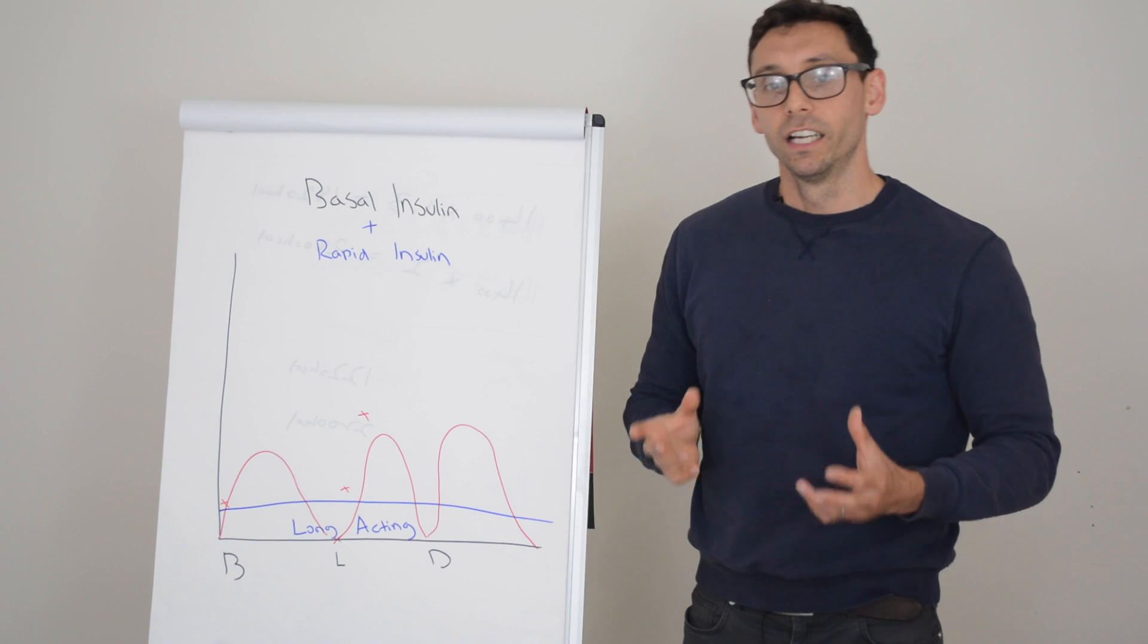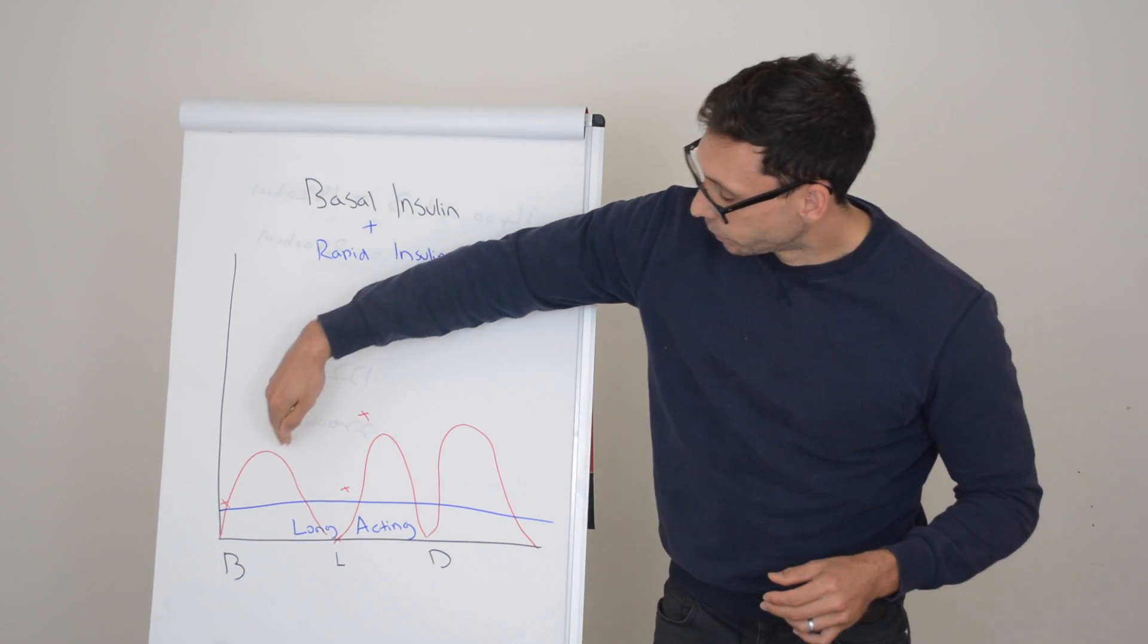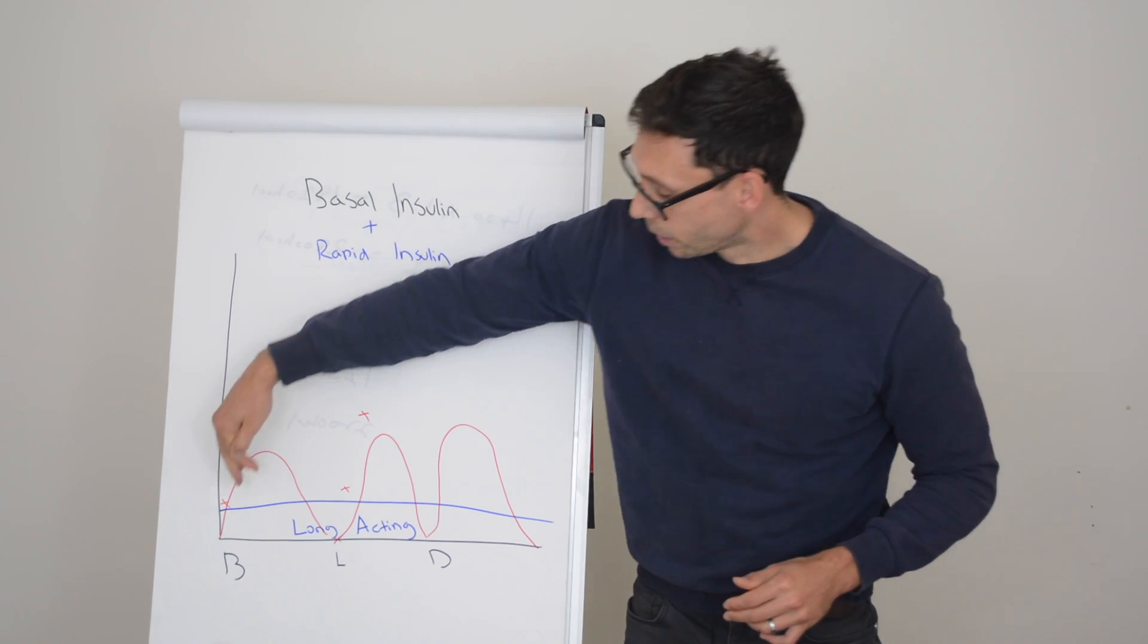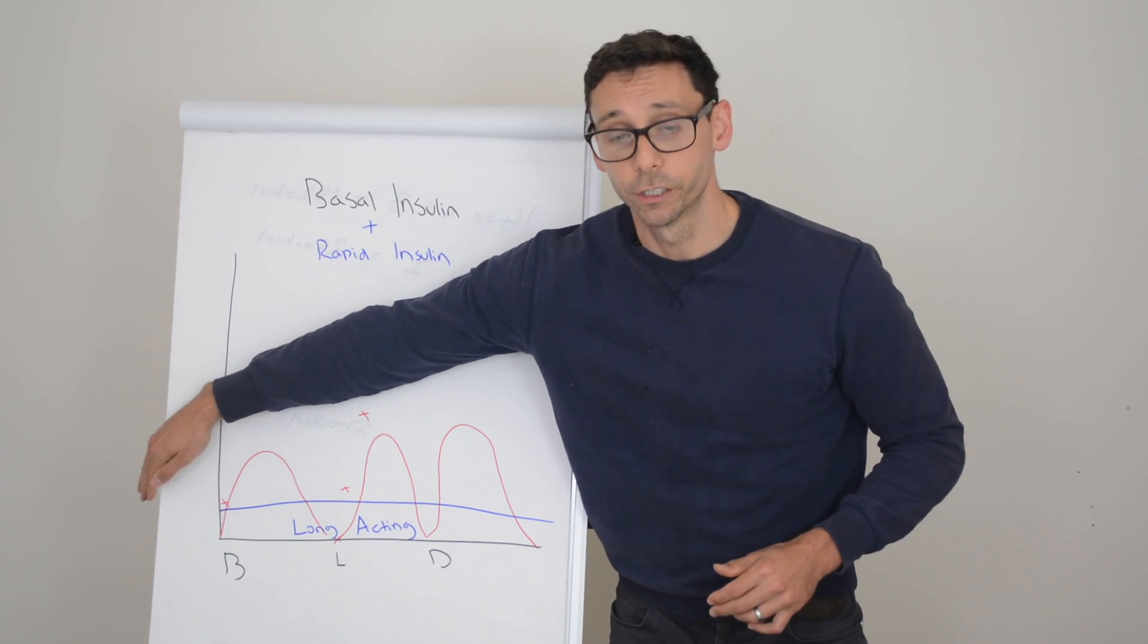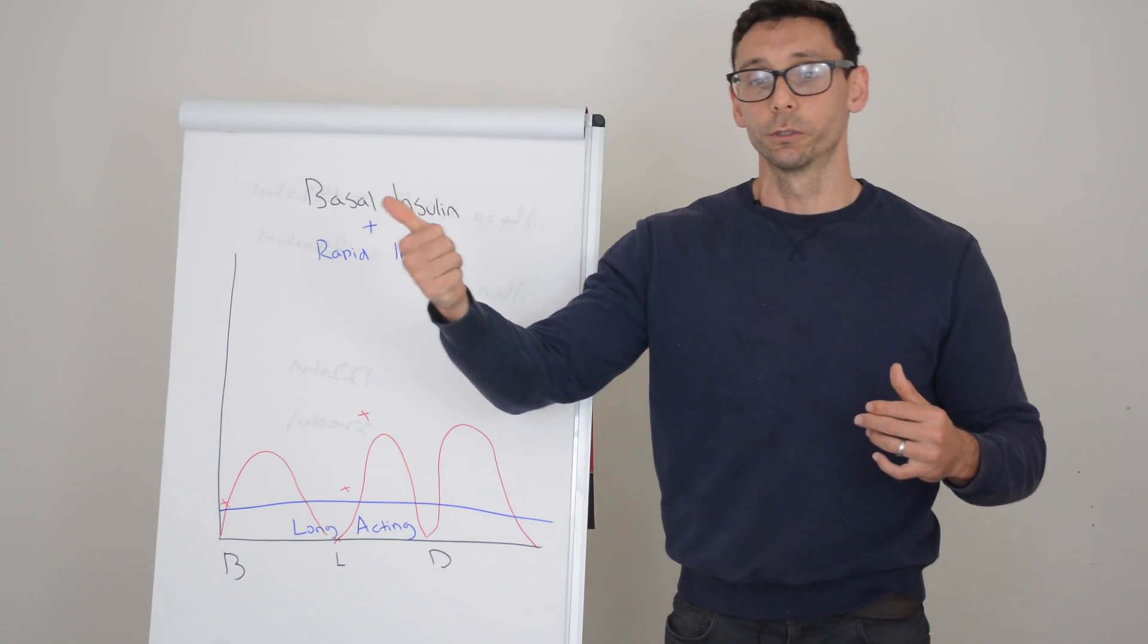Usually this means the type of carbohydrate they're eating is too quick releasing for their insulin to keep up, which means you either need to change the type of carbohydrate or move the insulin to an earlier injection to allow it to get into your system before the carbohydrate gets in and spikes the glucose.